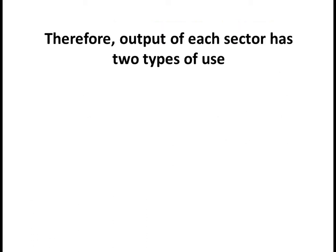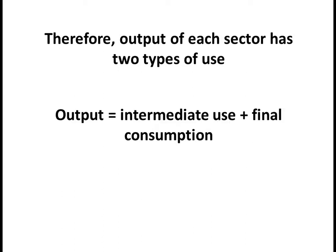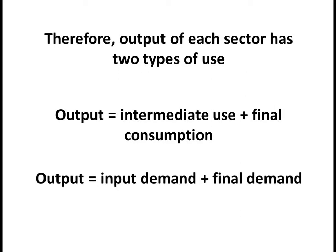Therefore, the output of each sector has two types of uses: intermediate use and final consumption. Therefore, output is equal to input demand plus final demand. In other words, output has two types of demand: input demand and final demand.